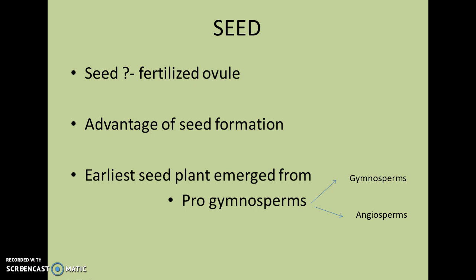The earliest seed plants emerged from spore-bearing plants called the pro-gymnosperms, which eventually led to the evolution of gymnosperms and angiosperms. The seeds act as a protective barrier during embryogenesis and also provide nourishment during both embryogenesis and the early germination process.